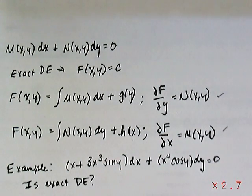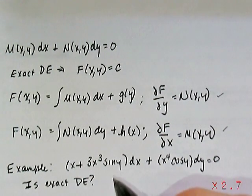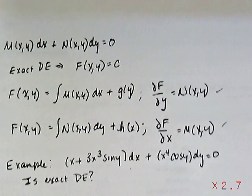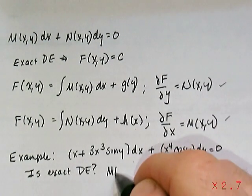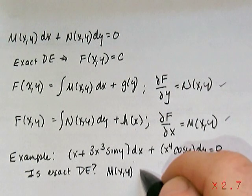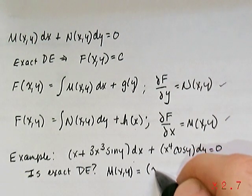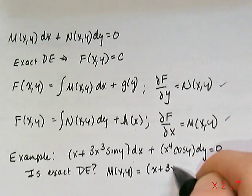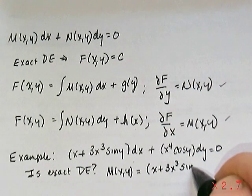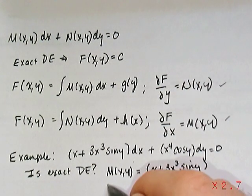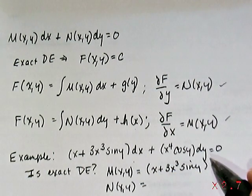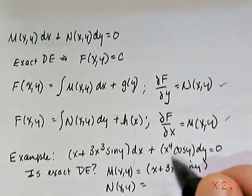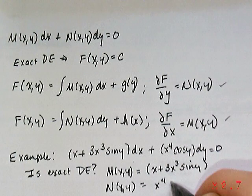Well, the first thing to do is to make sure we have it in the correct form with terms times dx plus terms of dy. So let's read off exactly what the M and N functions are. In this case, M(x,y) is the first expression in parentheses, which is x + 3x³sin y. And the N term, or the N function of x,y, is the other information in parentheses, x⁴cos y.